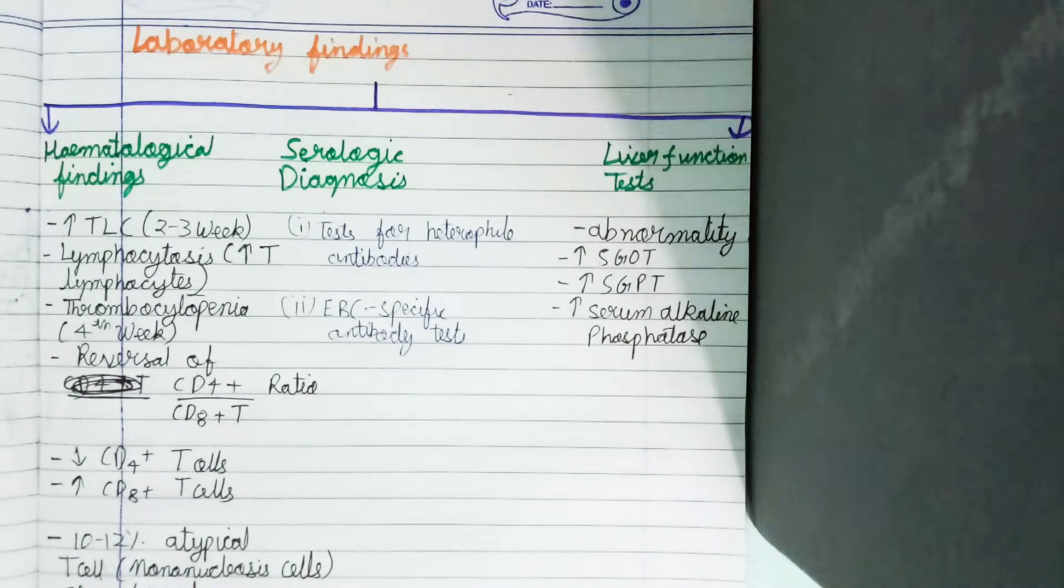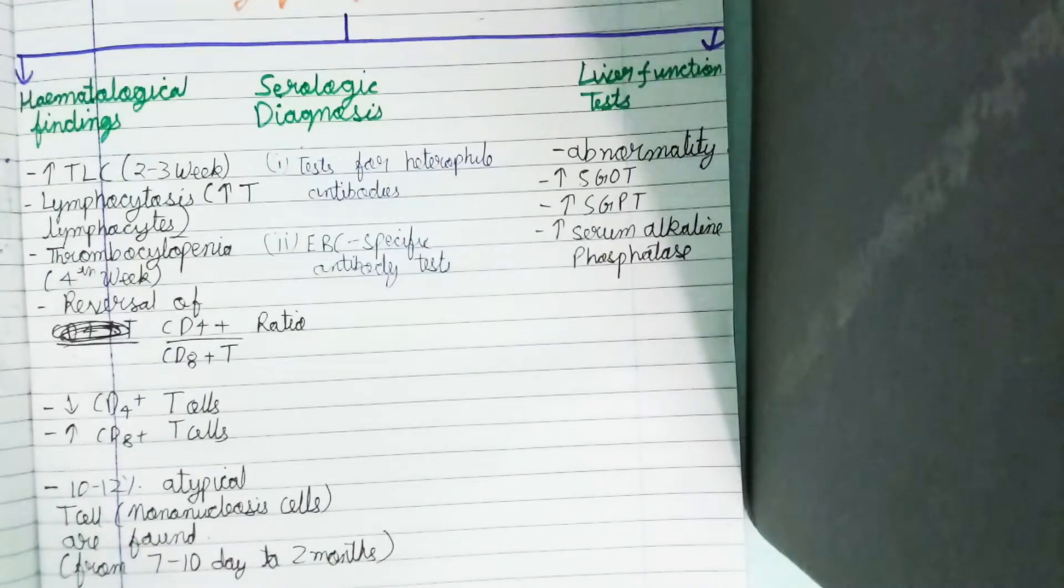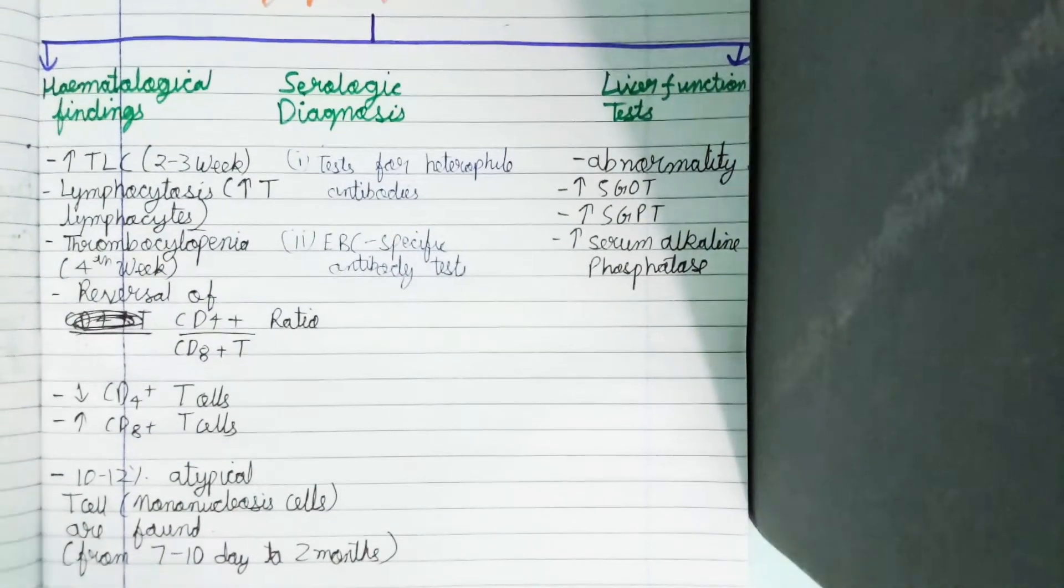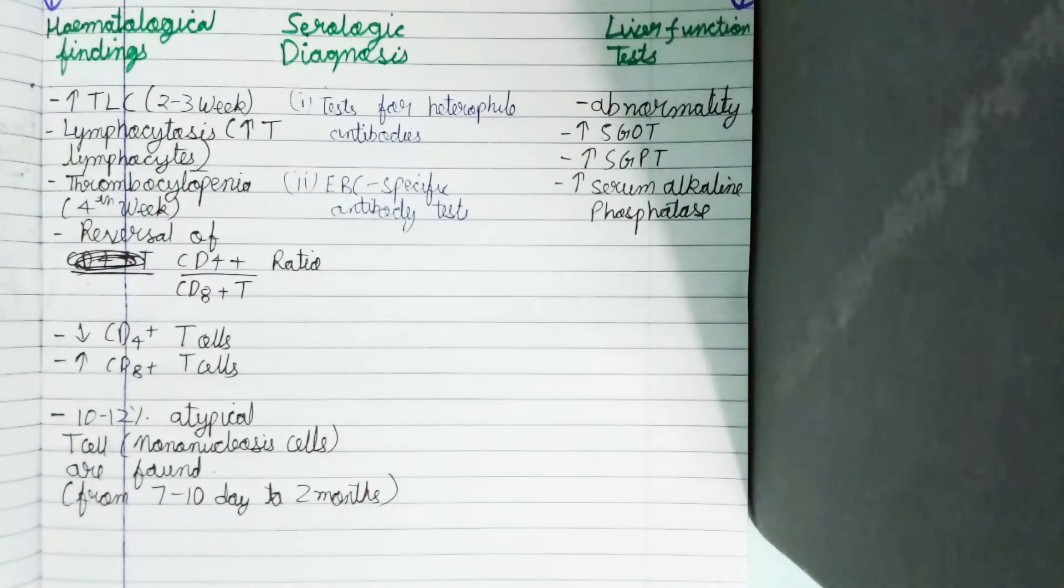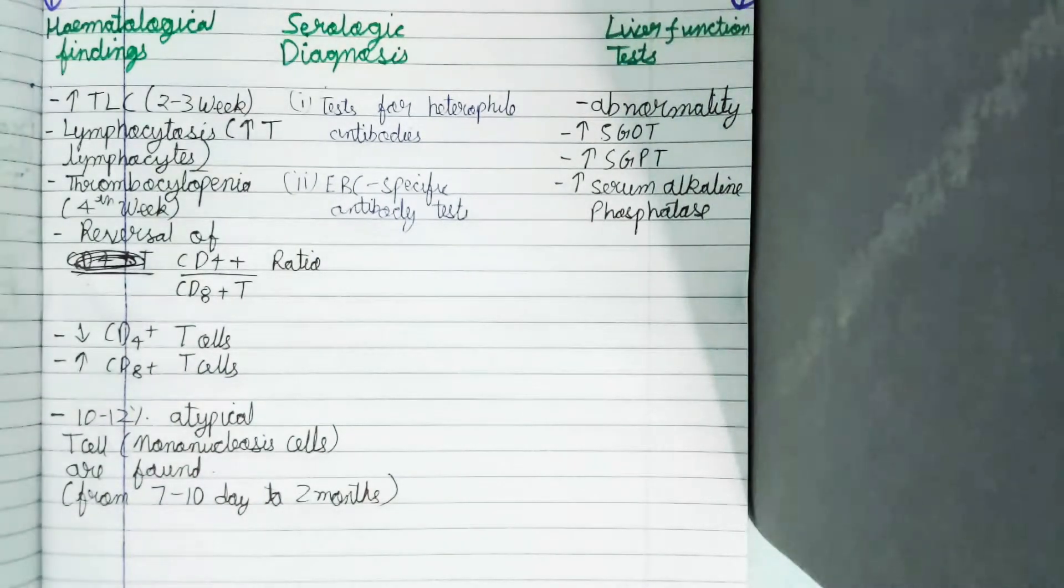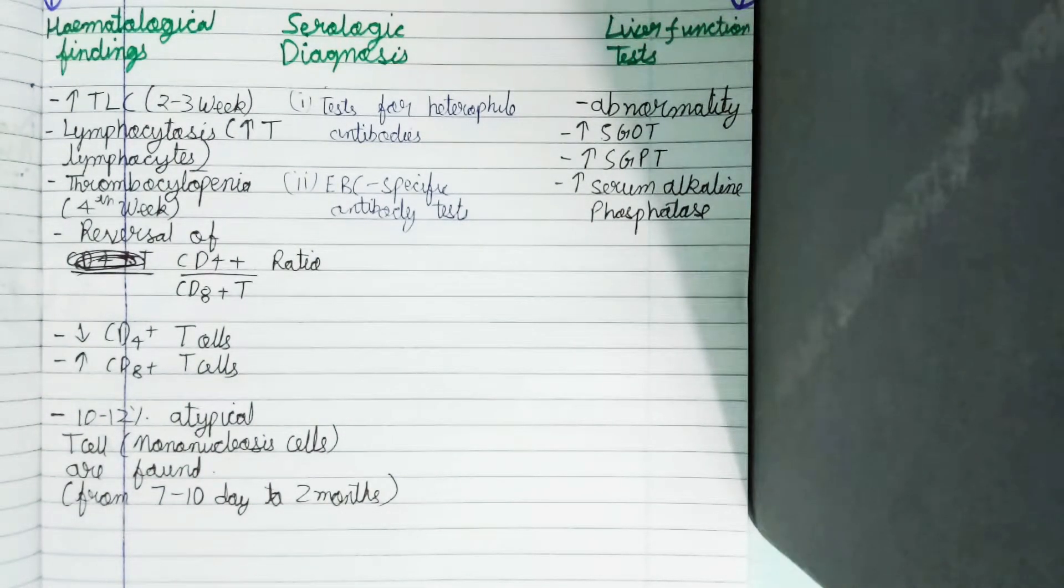In hematological findings, total leukocyte count (TLC) is increased, which can be observed in two to three weeks. Lymphocytosis occurs, with increased T cell lymphocytes mainly. Thrombocytopenia occurs, usually during the fourth week. Reversal of the CD4+ and CD8+ T cell ratio occurs.